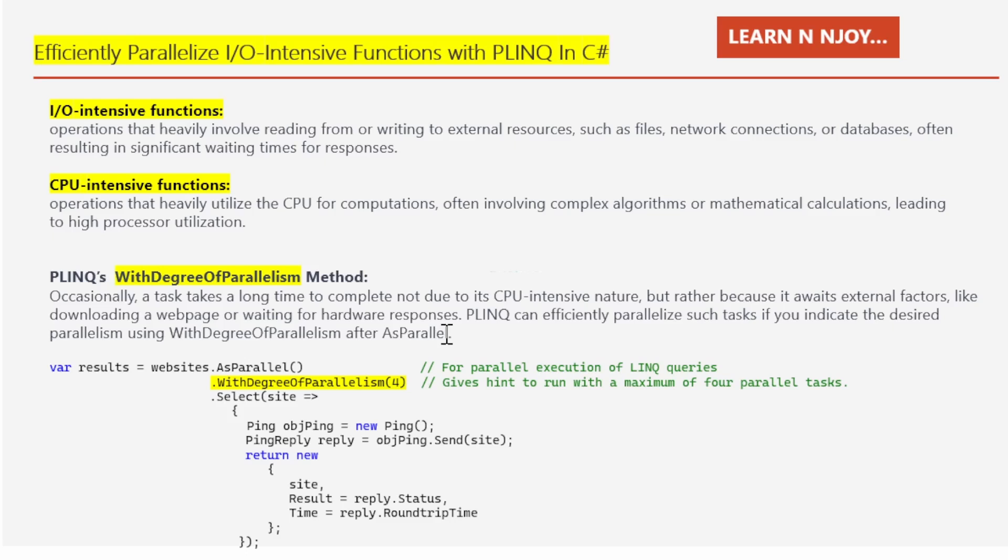PLINQ makes sure that your computer's resources are utilized effectively, just like a well-organized team working together to accomplish a task. Now here's the trick: when using PLINQ for tasks like pinging websites, you need to give it a hint about how many tasks it should handle simultaneously. This is where the degree of parallelism comes into play. It's like telling your assistants how many websites they should ping at once.